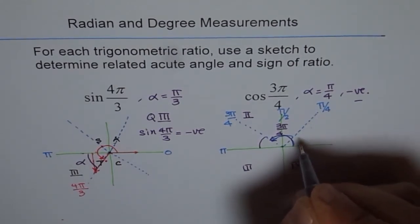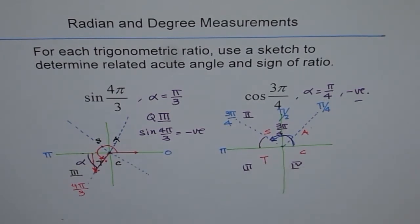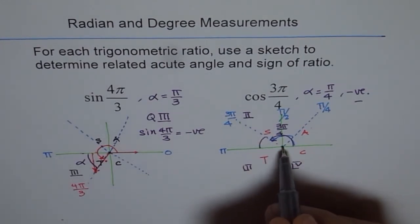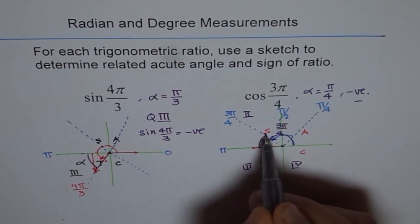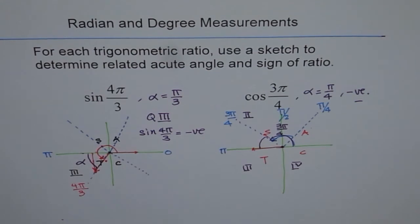So cos rule says C A S T. So we have sin positive in quadrant 2, all others are negative. So cos is also negative. Even otherwise, cos is what? Cos is adjacent over this side and this is minus x. Therefore, cos is negative.